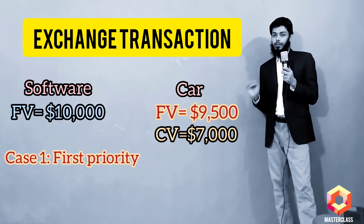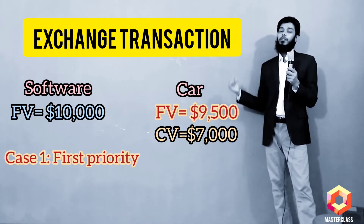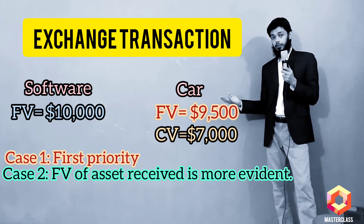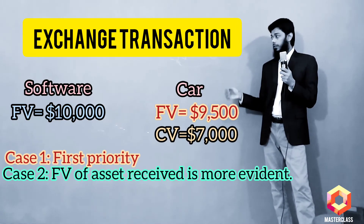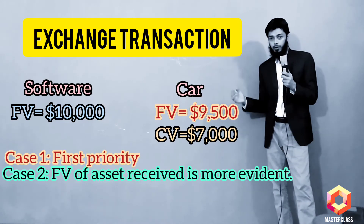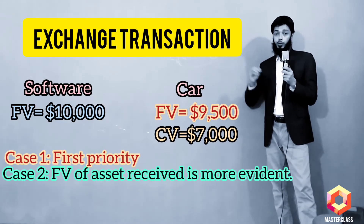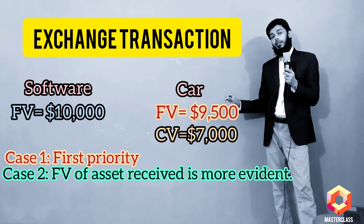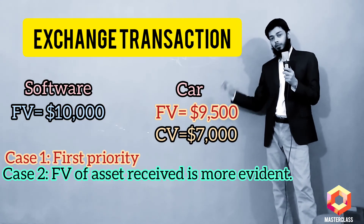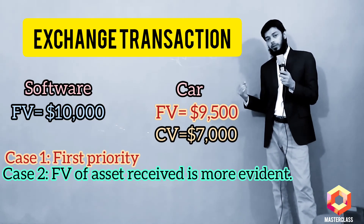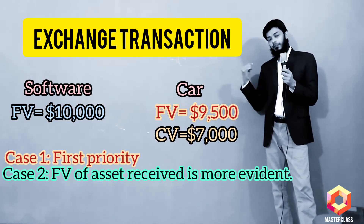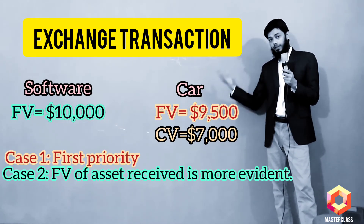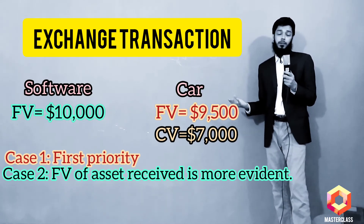What if the fair value of the asset received — the software — is more clearly evident? Which means I'm not sure about the fair value of my car but I am sure about the fair value of the software. In that case, the intangible asset would be recognized in my books at the fair value of the asset received, which is the software itself — and that makes sense.